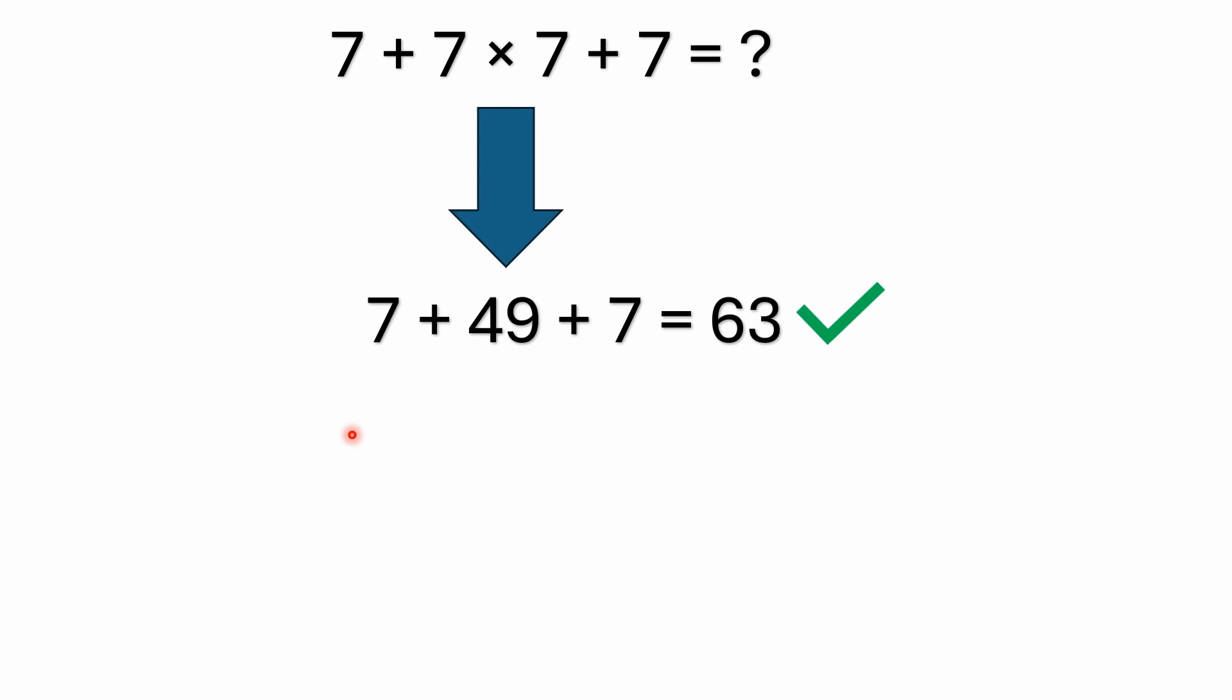Just keep in mind again, multiplication has priority, it has precedence over addition. So even though the multiplication shows up here, you do order of operations going left to right, but you need to remember multiplication and division have precedence over addition and subtraction.